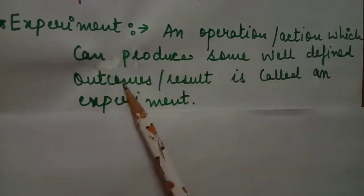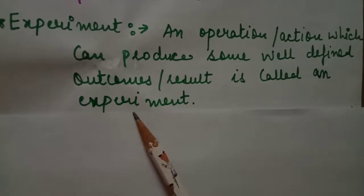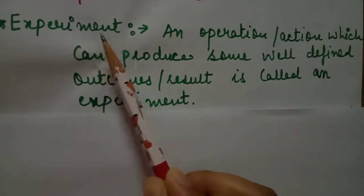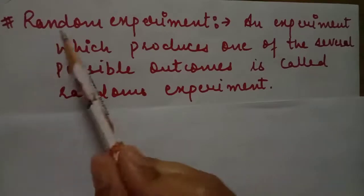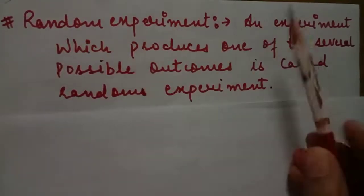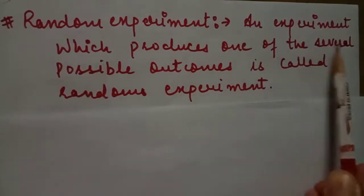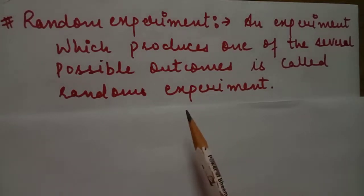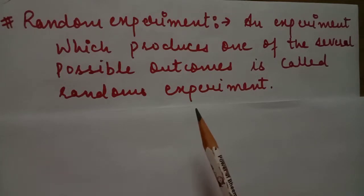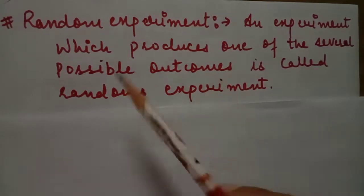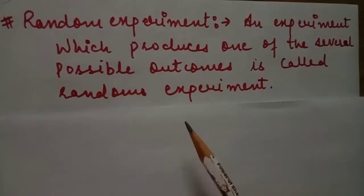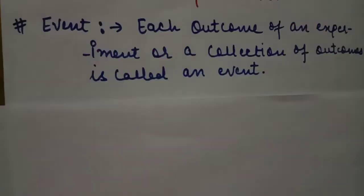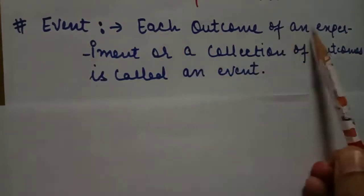An experiment is an operation or action which can produce some well-defined outcomes or results. A random experiment is an experiment which produces one of several possible outcomes. When we perform an experiment it is fixed that we have well-defined results, but when we do not know in advance which outcome will occur, we call it a random experiment.